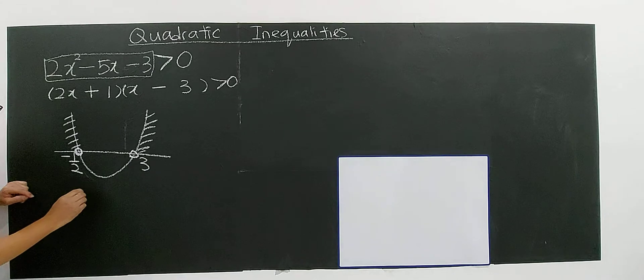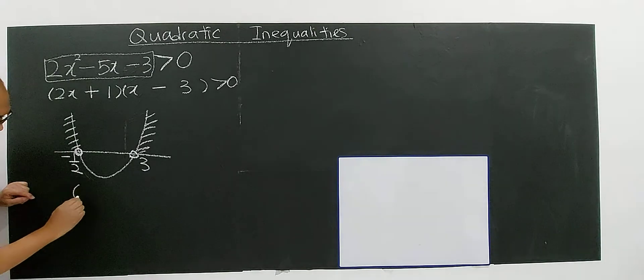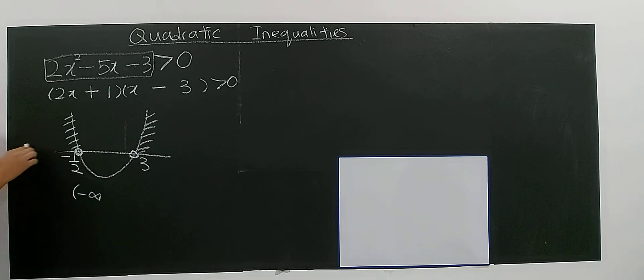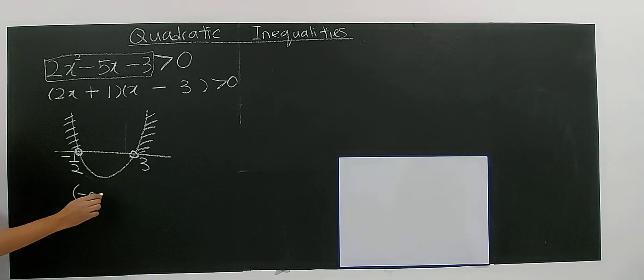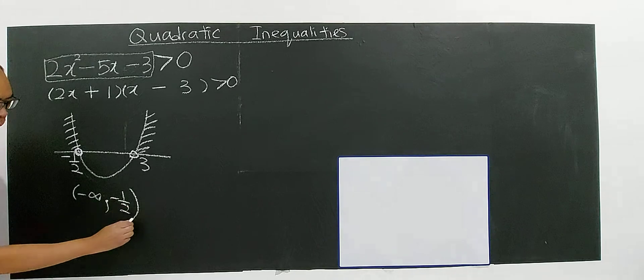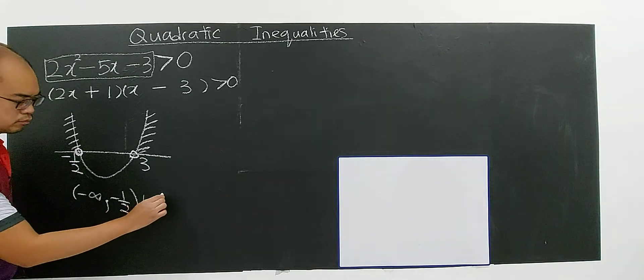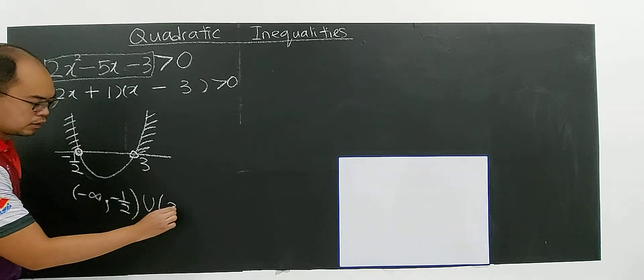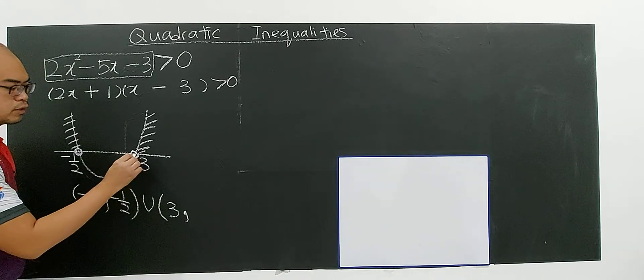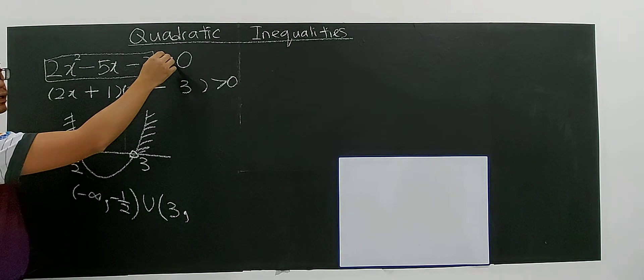So I can conclude that the solution for this problem will be negative infinity, means that x less than negative 1 over 2, which is negative infinity up to negative 1 over 2. Open means not include negative 1 over 2. So union, open, because 3 not include 3. So because if you include 3 you have to put equal 0. Because it cannot be 0.